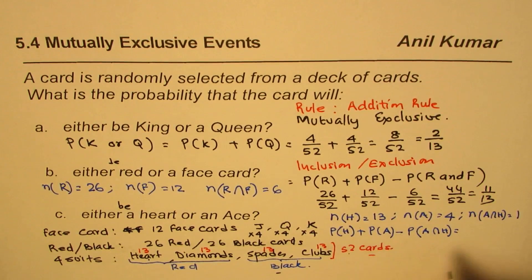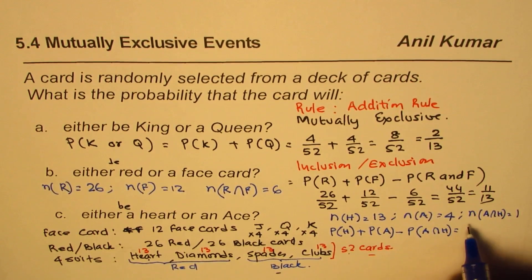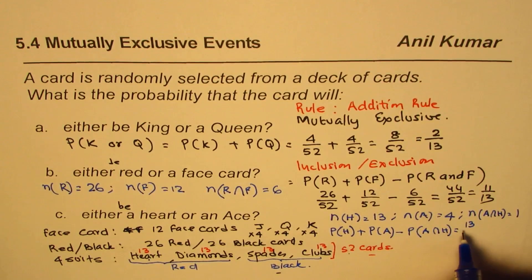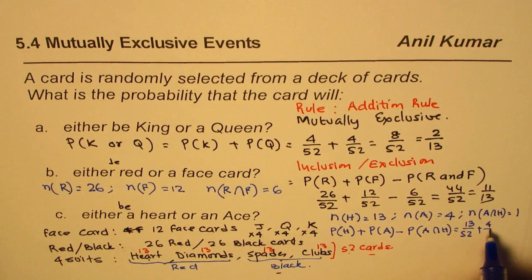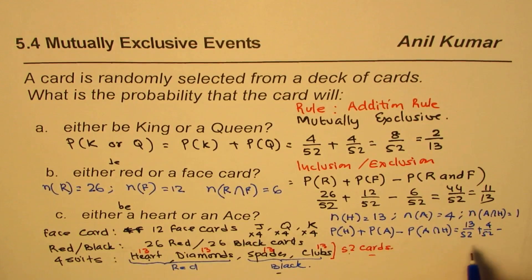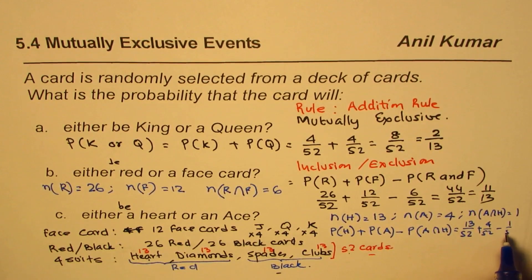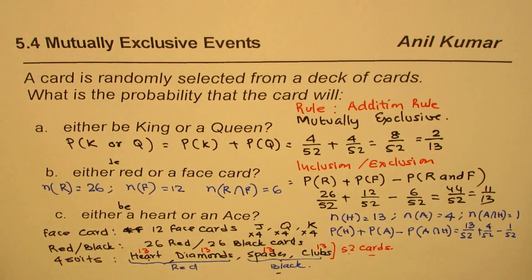Since there are 13 of these, we can write this as 13 over 52 plus 4 over 52 minus 1 over 52. So that becomes the result.